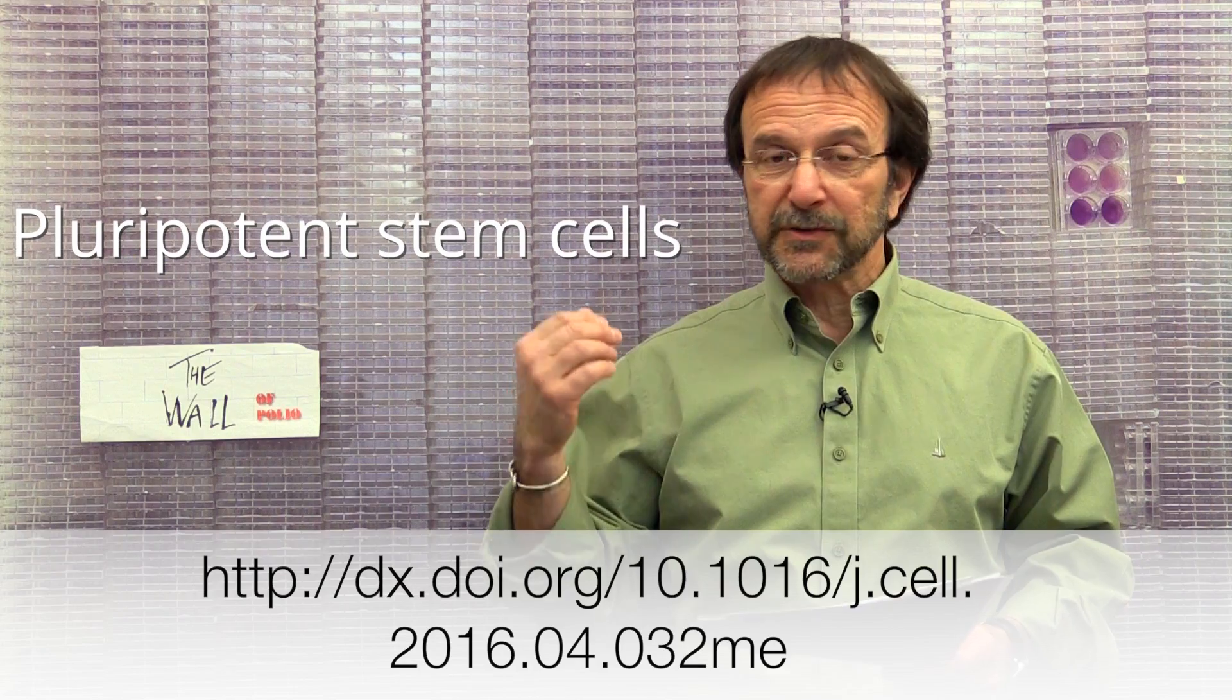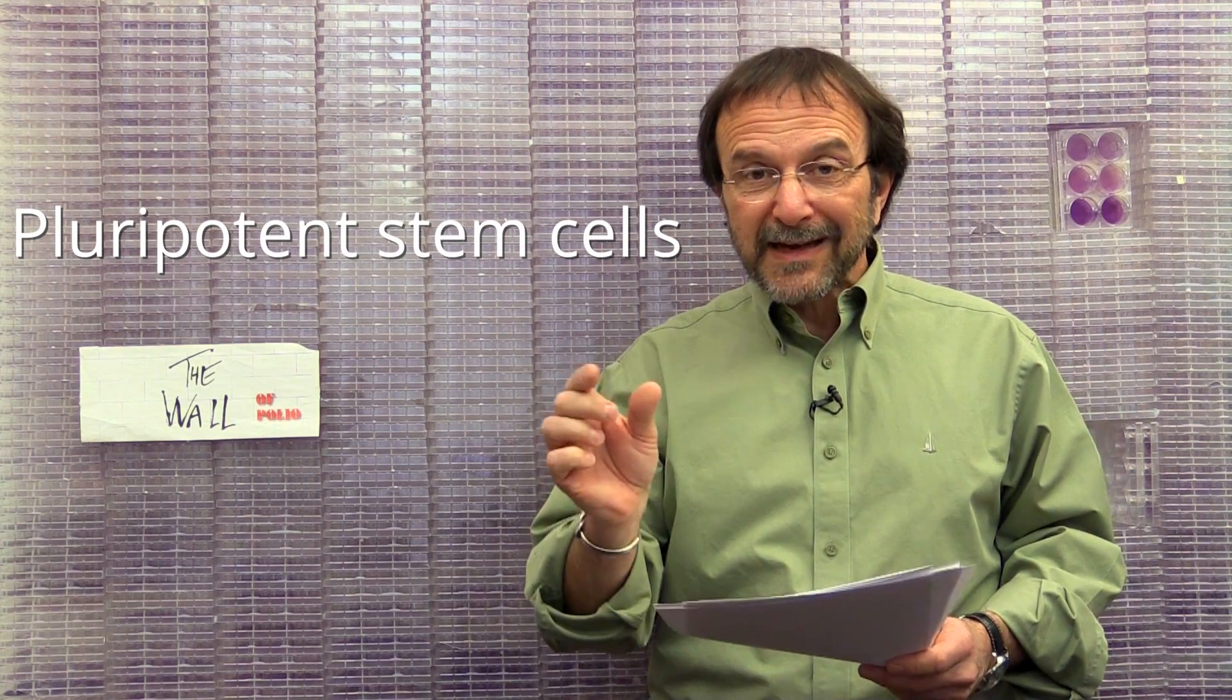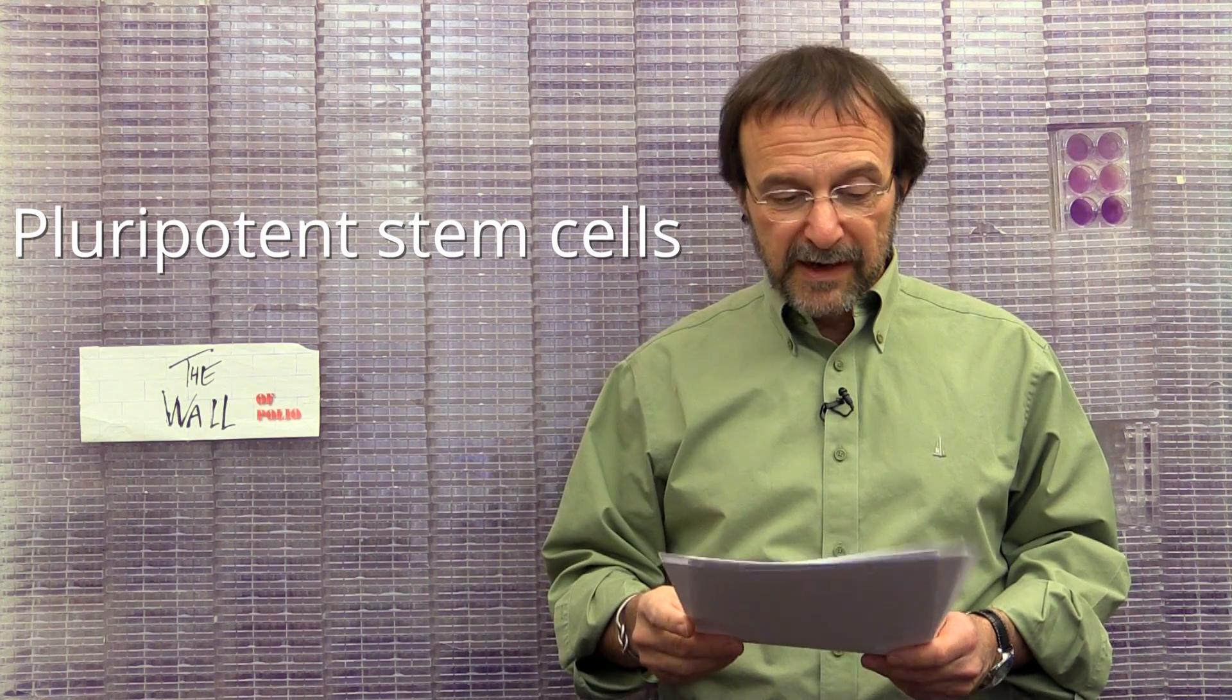Our last story comes out of Johns Hopkins University, where investigators have used stem cells. These are cells in the body that can give rise to any other cell. They're called pluripotent stem cells. They can give rise to a lung, a liver, a brain cell, and they've used them to make tiny models of the brain. And these are called brain organoids.